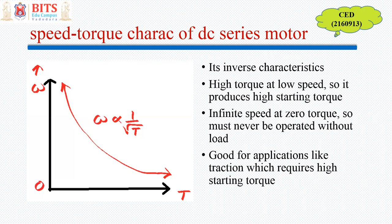And so far as the applications are concerned, it is good for applications where high starting torque is required, like a traction application, where static friction is predominant. So this is all about the basic speed versus torque characteristics of DC shunt and series motor. We continue about the modified characteristics in our sub sequencing.